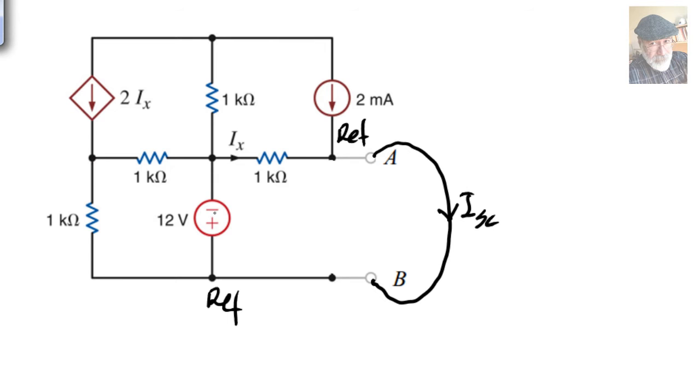Immediately we realized this voltage here is applied between the central node and the reference node. So the voltage here, with this polarity, is 12 volts. That means that this current is 12 volts, 1 kilo ohm. This is 12 milliamps.